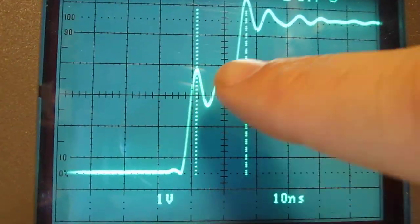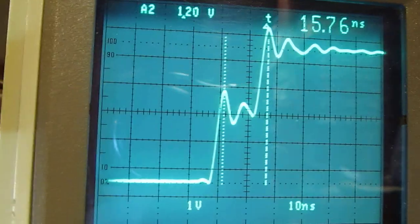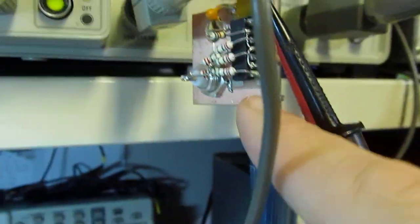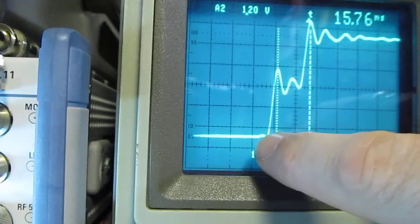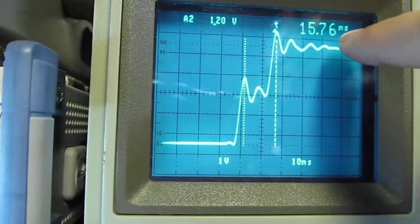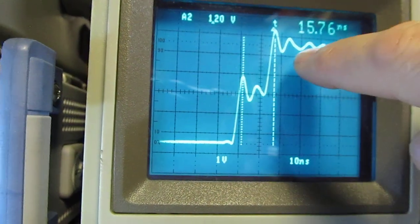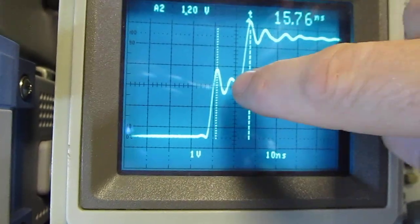The nice thing about having the fast edge is that if that edge was slower, we'd probably smear right through this. You wouldn't be able to see the reflection very easily. Having a very fast edge, you can separate that out.